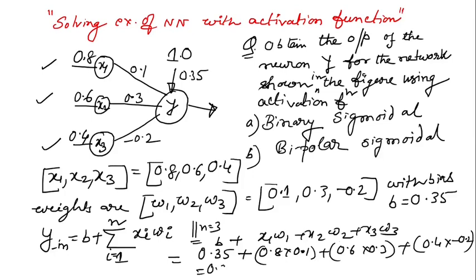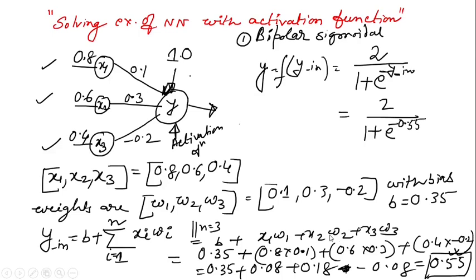So it is nothing but 0.35 plus 0.08 plus 0.18 minus 0.04. So it is finally coming around. I think this one is not 5, this is 0.53. So this will be 0.53, not 0.55. So this will come 0.53.